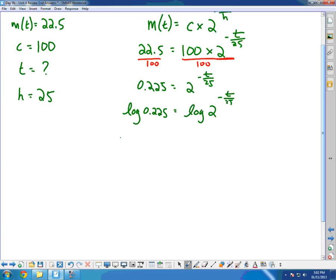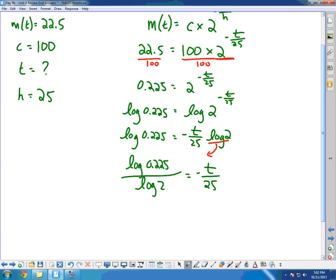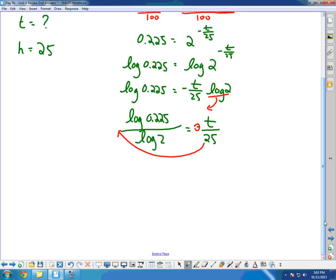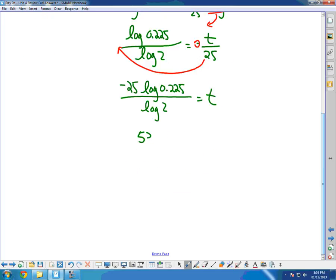We do this so that we can bring down negative T over 25. Now we can get rid of the log 2 by dividing. So log 0.225 divided by log 2 equals negative T over 25. I want T by itself, so I'm going to bring this 25 over. Since it's being divided by 25, I multiply by 25. I'm also going to take that negative and divide both sides by negative and take it to the other side. And so we'll have negative 25 log 0.225 all over log 2 equals T. Punch that in our calculator carefully, and we should get 53.8 equals T.